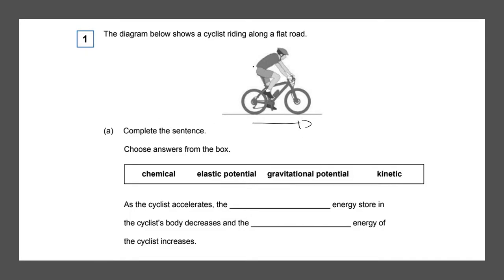Gravitational potential energy — the cyclist is on the ground, so that means it has zero gravitational potential energy, so it can't be that. Elastic potential energy is something being stretched, and nothing is being stretched here. So we know it's going to be chemical potential energy — this is the chemical energy stored in the cyclist's body. And the energy that increases is going to be kinetic energy because the cyclist is moving. And that will give you two marks.